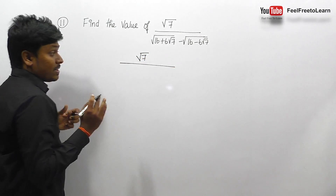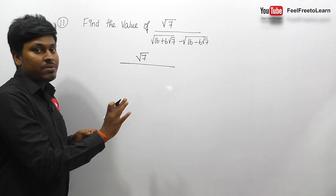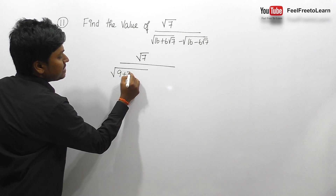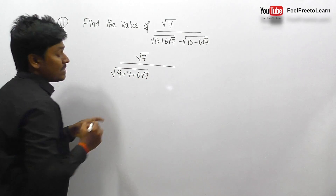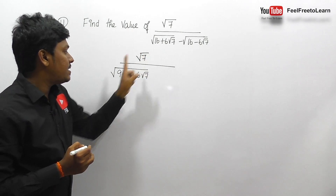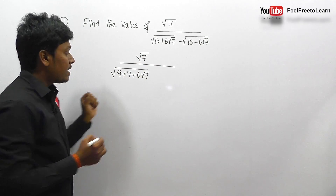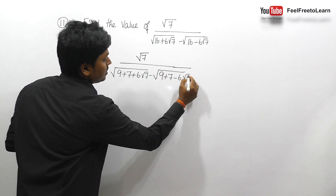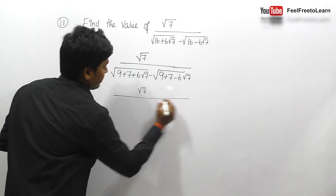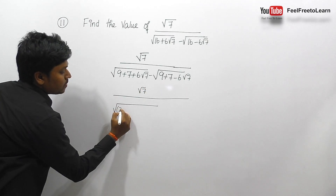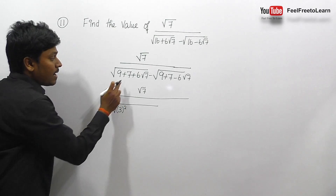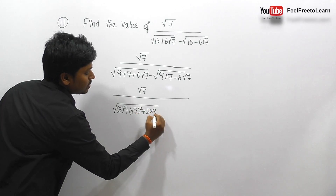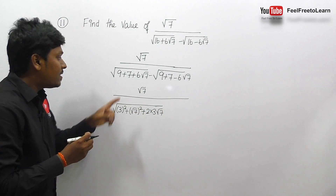My only target is to convert this expression in terms of (a+b)². I'm going to write 16 as 9+7, so 16+6√7 becomes 9+7+6√7. Similarly, I write the other expression as 9+7-6√7. Now, 9 can be written as 3², and 7 can be written as (√7)², plus 2×3×√7.